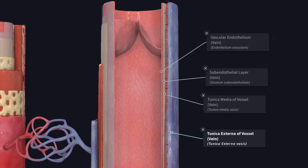The wall of a vein is thinner than that of an artery which has the same sized lumen. The tunica media contains a much larger quantity of collagen than in the artery. The amount of elastic tissue or muscle in the tunica media is much less.